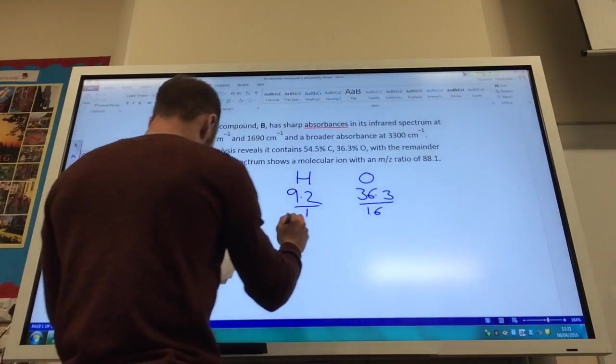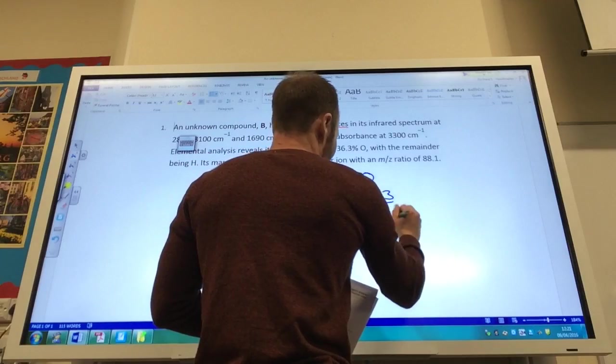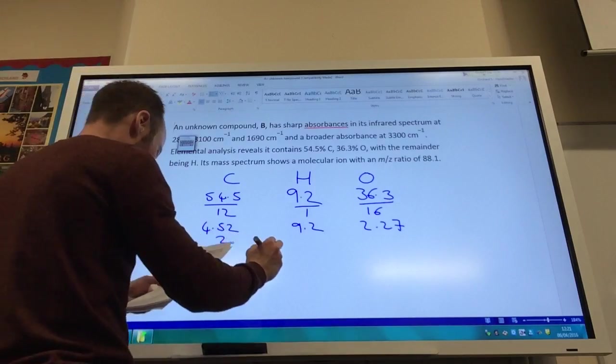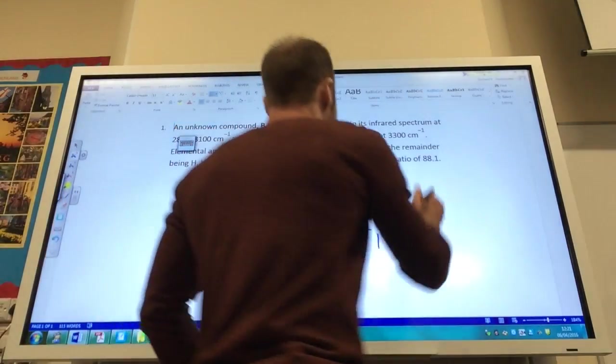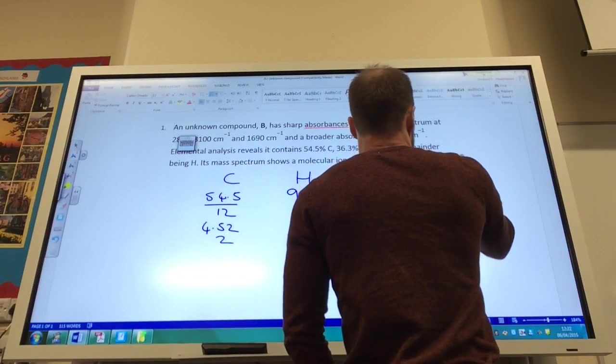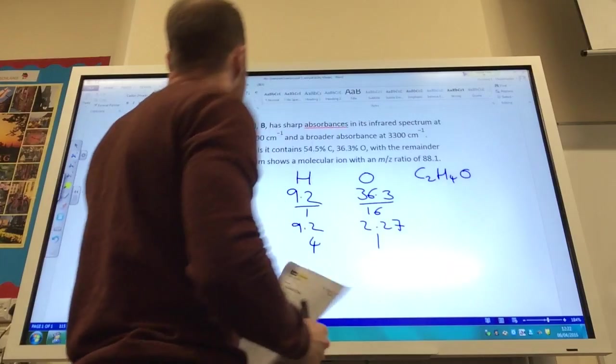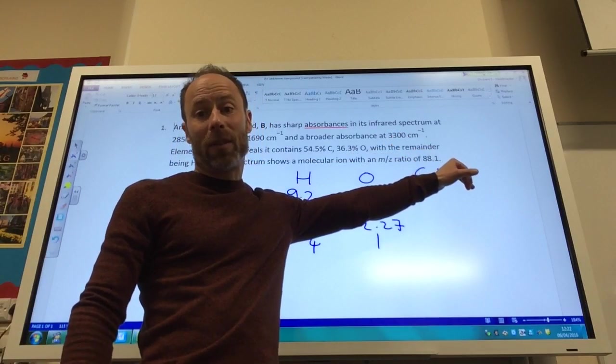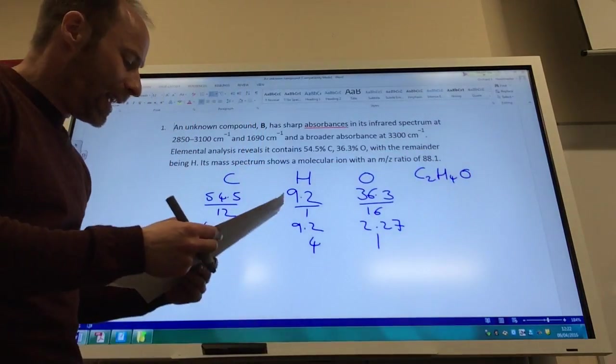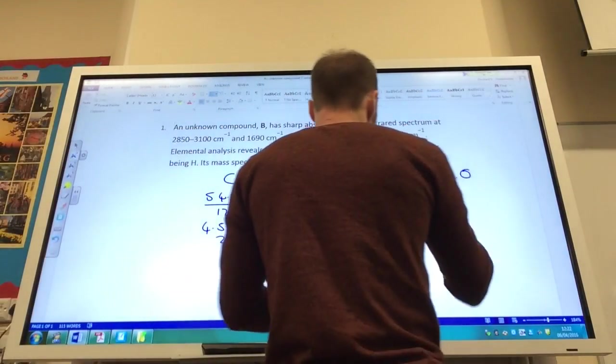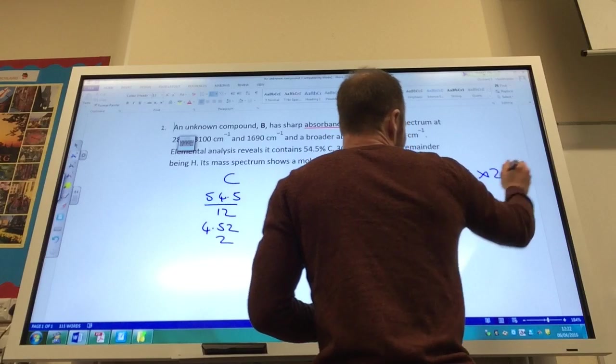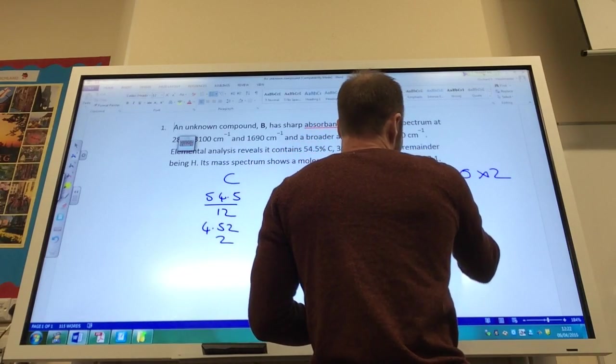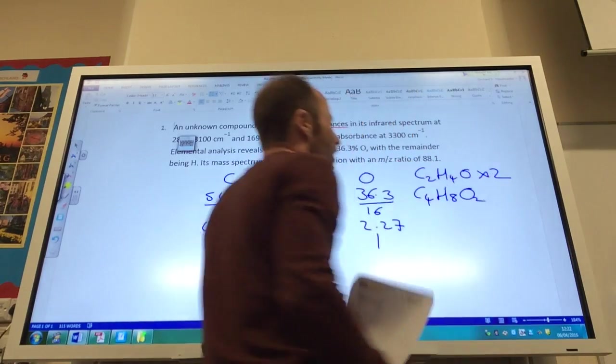4.52, let's say the oxygen is 2.27 and hydrogen of course 9.2. Divide through the smallest one, you get 2, 1, and 4. So my empirical formula is C2H4O. But they've also given me the molecular ion as being 88.1, so that does not add up to 88, it's not heavy enough. If you work that out, you will find your molecular formula, which you'll need to times that by 2.